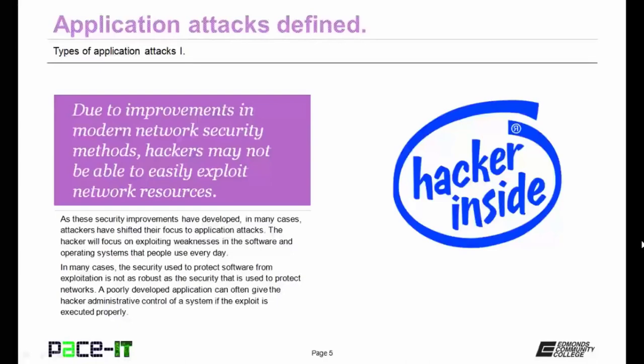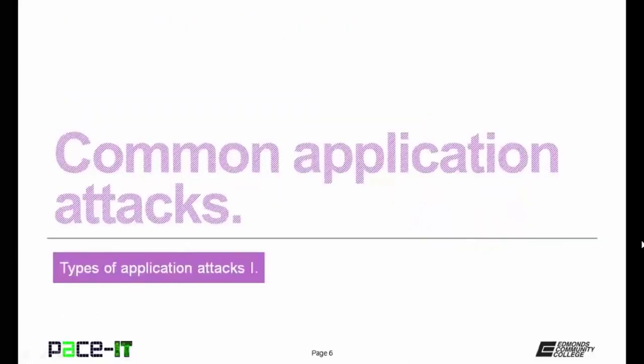In many cases, the security used to protect software from exploitation is not as robust as the security used to protect networks. A poorly developed application can often give the hacker administrative control of a system if the exploit is executed properly. And that briefly defines an application attack. Let's move on to the discussion about common application attacks.